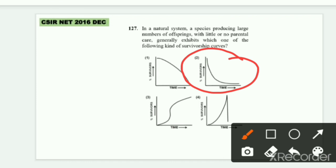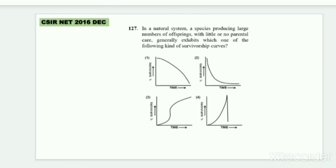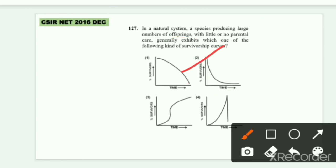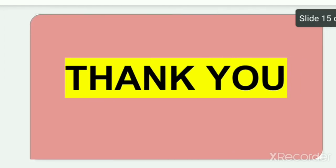In Type 3, small organisms produce many offspring without parental care. Looking at the options provided, the graph corresponding to Type 3 is the second option. So the right answer is second — Type 3 survivorship curve. Thank you so much for watching.